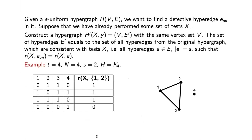Assume we are given an S-uniform hypergraph and want to find the defective hyperedge, and we have already performed some tests described by matrix X. We construct a new hypergraph H' with the same vertex set, including only those hyperedges of the original hypergraph that are consistent with the tests from matrix X — formally, hyperedges of size S such that r(X, e_unknown) equals r(X, e).